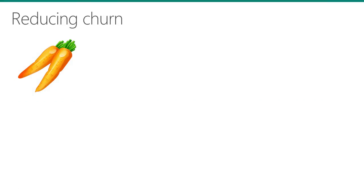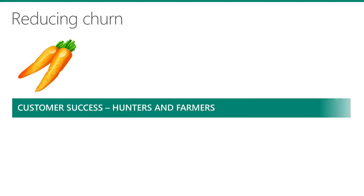So, how can you lower your churn rate? We will look at two different approaches: the carrot and the stick. The most effective way to keep clients from leaving is to split the sales role into hunters and farmers. Farmers are often called customer success managers. It is their job to maintain communications, make sure the client is using as much of the product functionality as possible, upsell additional functionality, and in general keep them happy so that they renew.